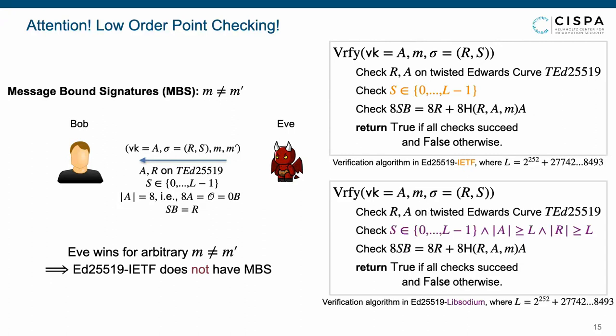The LibSodium variant prevents this attack by low order point checking. In addition to bounds checking, the LibSodium version rejects the points A and R, which have order smaller than L.